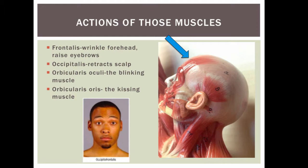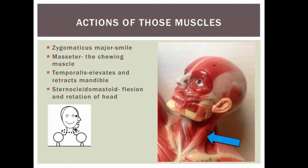Now some actions of those muscles. Here we have a picture of a man wrinkling his forehead, and it's actually the frontalis muscle that causes this action. The occipitalis on the backside would actually retract the scalp. The orbicularis oculi is known as the blinking muscle, and the orbicularis oris is known as the kissing muscle. The zygomaticus major is known as the smile muscle and pulls back the lips. The masseter is known as the chewing muscle.